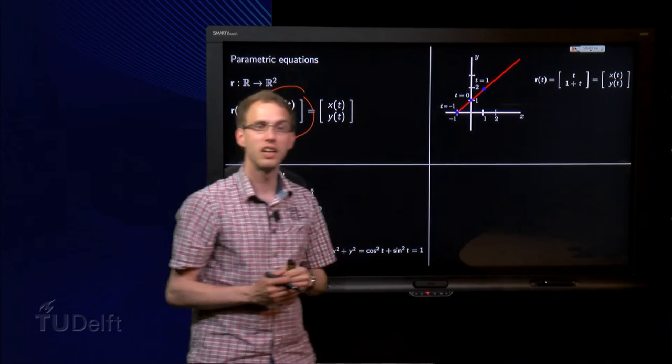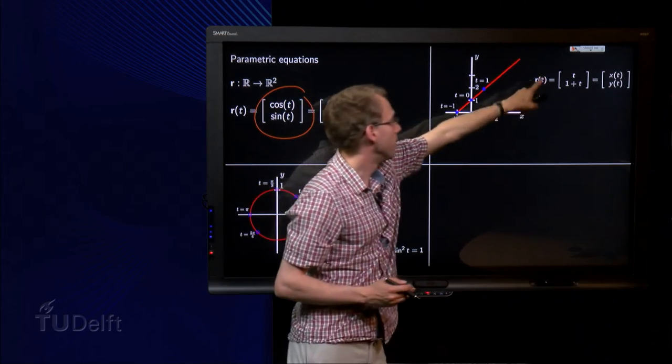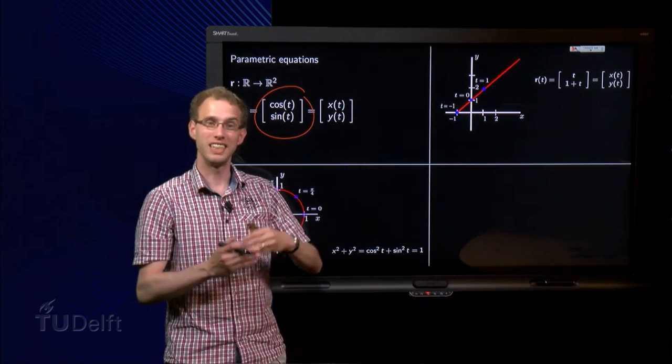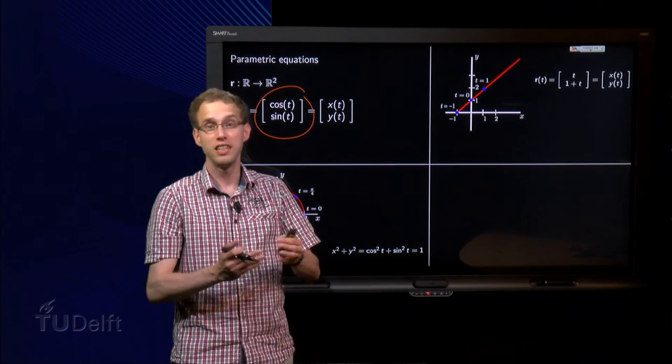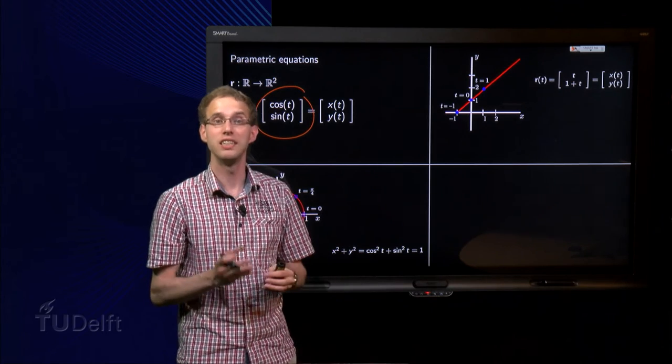The blue dots lie nicely on the line. So such a parametric equation, which is linear in t, in fact describes a line, in this case in 2D.